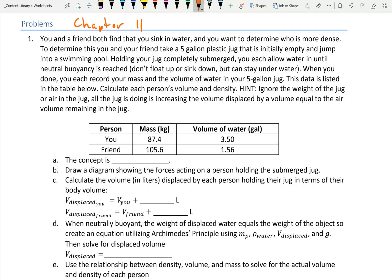Neutral buoyancy is the point where if you are pushed down, you'll just keep going down. If you're pushed up, you'll just keep going up. So you are at equilibrium. Neutral buoyancy is an equilibrium situation. A hint: Ignore the weight of the jug or the air in the jug. The density of air is 1.225 kilograms per meter cubed, whereas water is 1,000 kilograms per meter cubed. So it's a factor of more than 800 and pretty negligible.